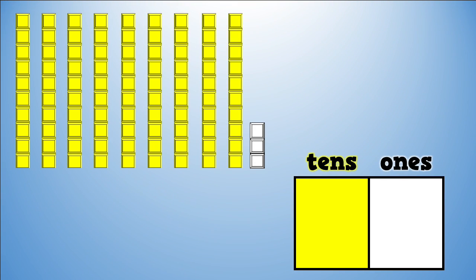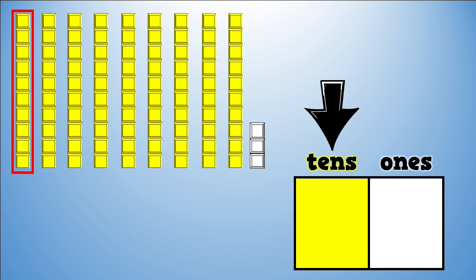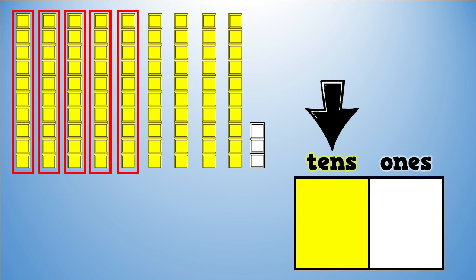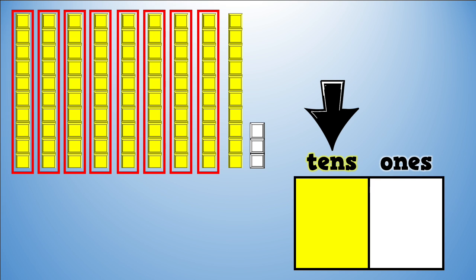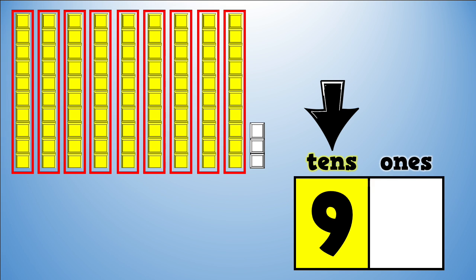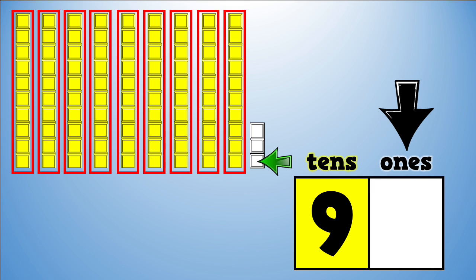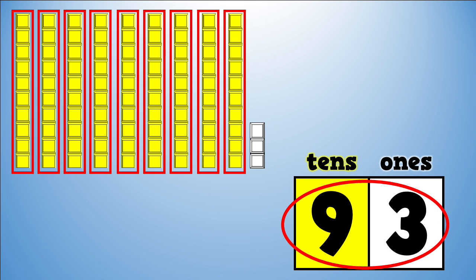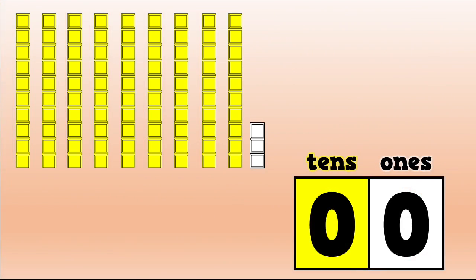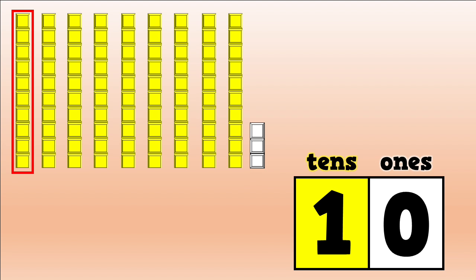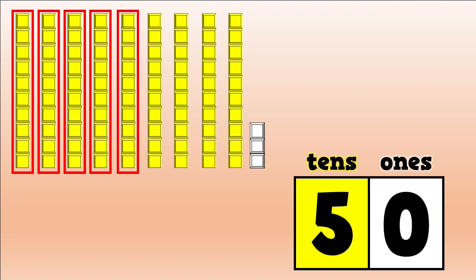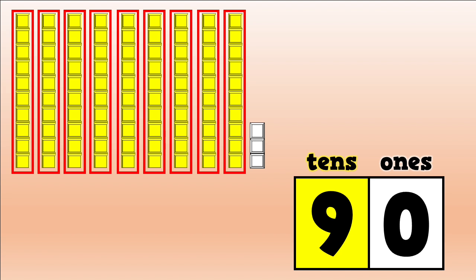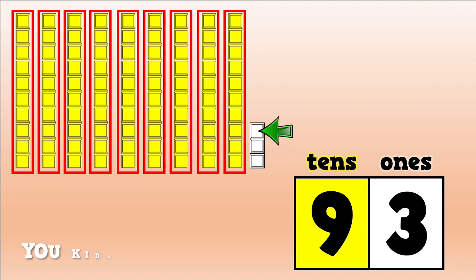Last number. How many groups of ten are there? One, two, three, four, five, six, seven, eight, nine. Nine groups of ten. How many extra ones do I have? One, two, three. Three extra ones. What number did I just write? Ninety-three. Perfect! Skip count and count on one more time to check your number: ten, twenty, thirty, forty, fifty, sixty, seventy, eighty, ninety, ninety-one, ninety-two, ninety-three. You kids are experts!